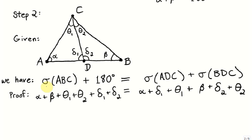Step 2 states that the angle sum of triangle ABC plus 180 degrees equals the angle sum of ADC plus the angle sum of BDC. Labeling the angles of ADC as alpha, delta-1, and theta-1, and those of BDC as beta, delta-2, and theta-2, we write out both angle sums. Rearranging, delta-1 and delta-2 form a linear pair summing to 180 degrees by Euclid's Proposition 13, and the remaining angles form the angle sum of ABC. This completes step 2.